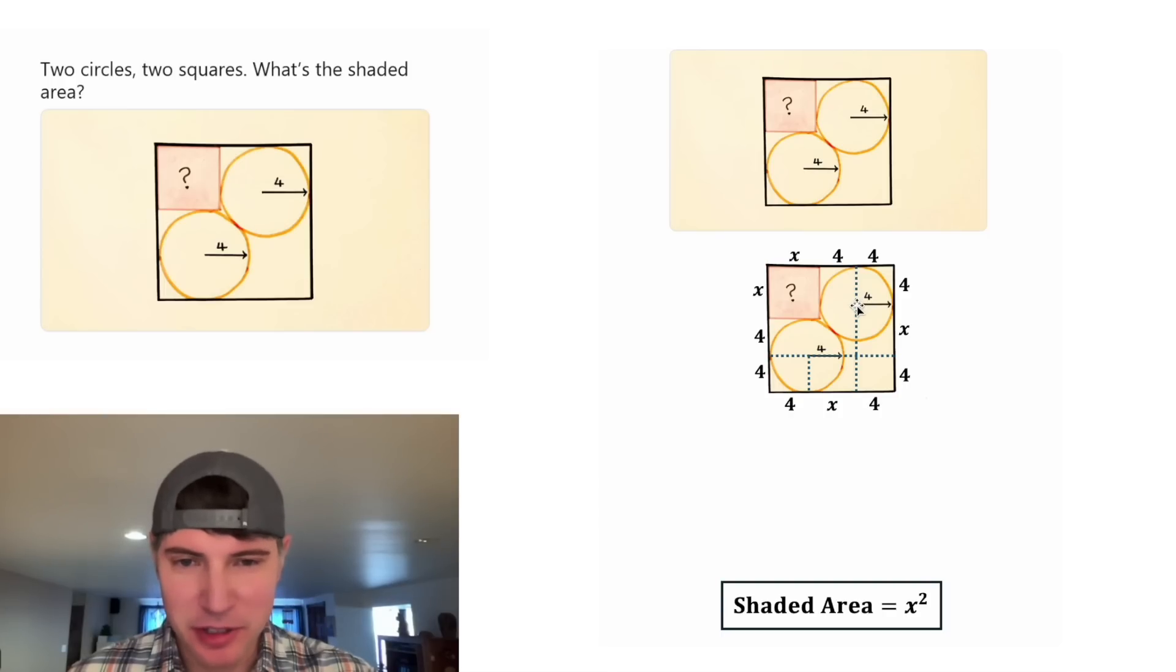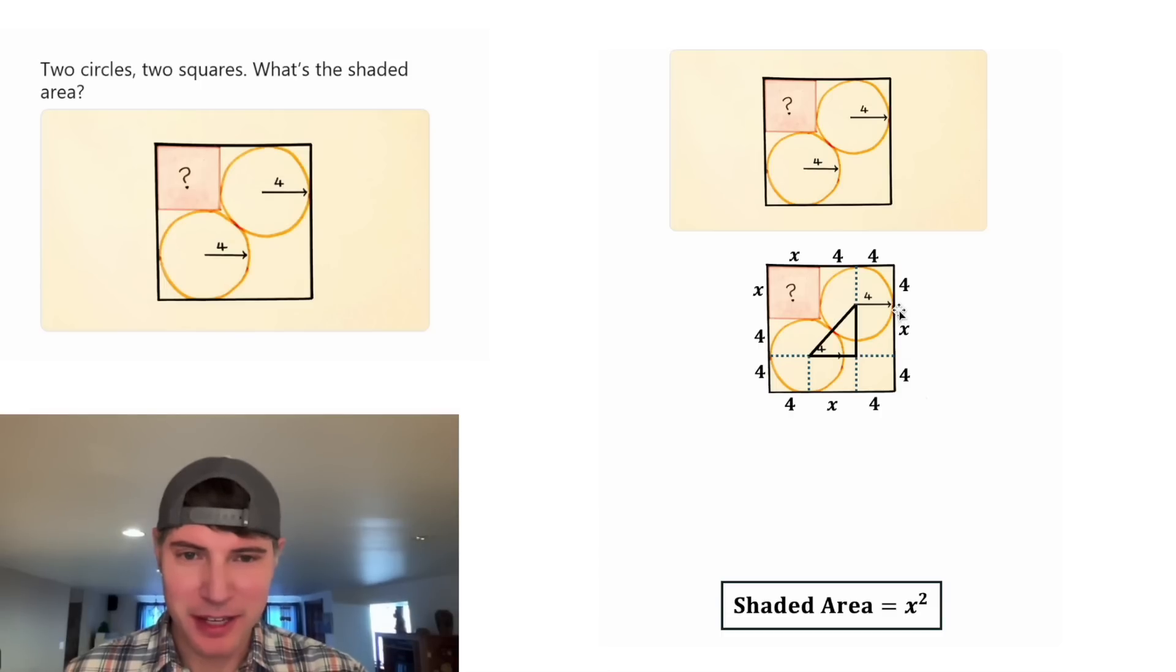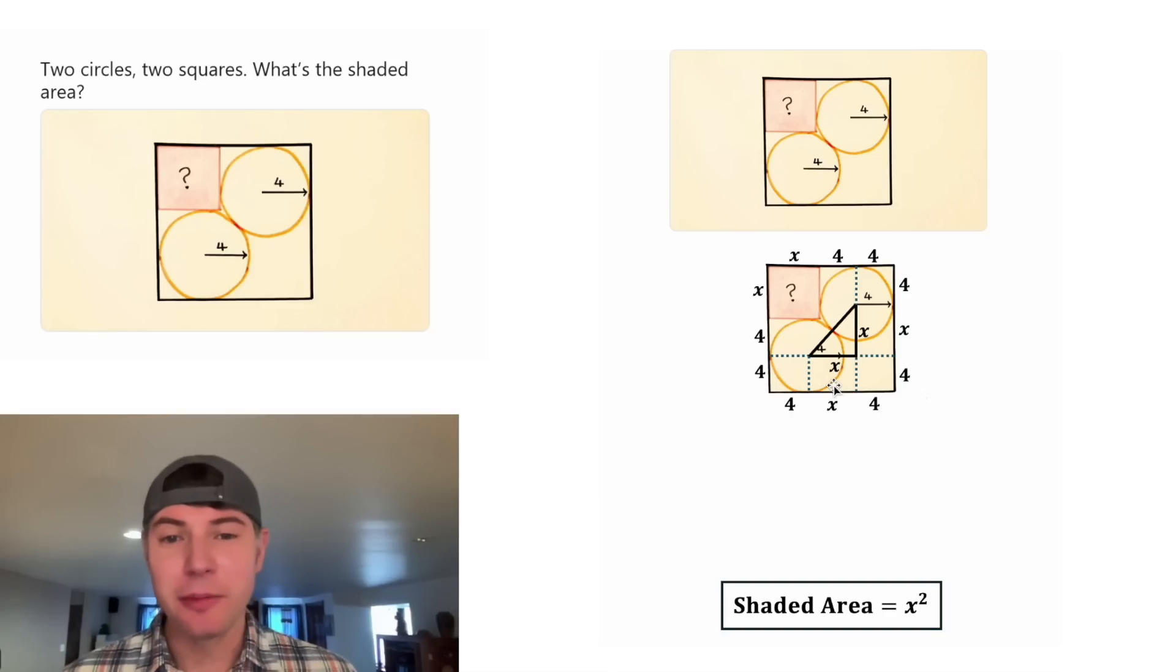Now for the next step, let's draw this right triangle inside of here. The height of our right triangle will be the same thing as this right here, so it'll be equal to X. And the base of our triangle would be the same thing as this right here, so it'll be equal to X.